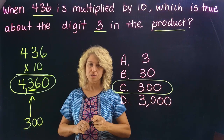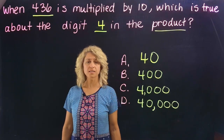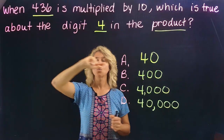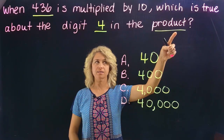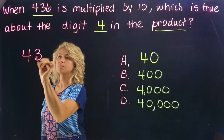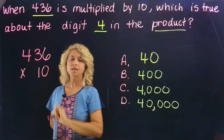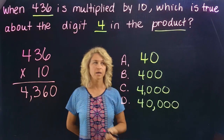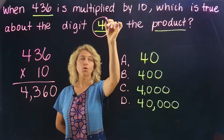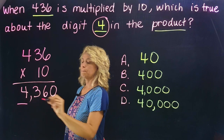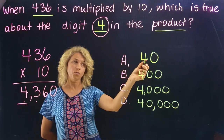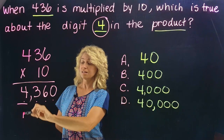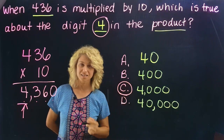Let's try another one. What if we take the same number but change the question just a little bit? When 436 is multiplied by 10, which is true about the 4 in the product? Take the same problem, multiply times 10, you get 4,360. Now what is the value of the 4 in the product? Ones, tens, hundreds, thousands — it's the thousands place, so four thousand is correct.